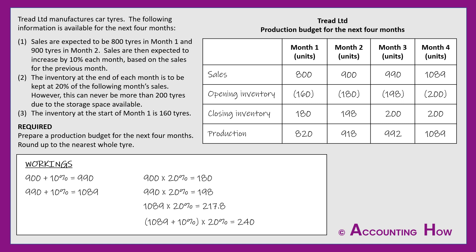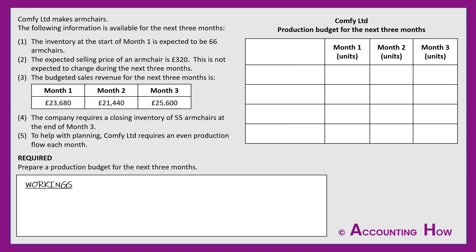Now let's look at a second question with a slight variation: a production budget requiring an even production flow. Comfy Limited makes armchairs. The inventory at the start of month one is expected to be 66 armchairs. The expected selling price is £320, unchanged over three months. The budgeted sales revenue for three months is provided in a table. A closing inventory of 55 armchairs is required at the end of month three, and Comfy Limited requires an even production flow each month.